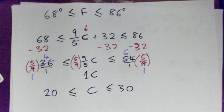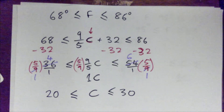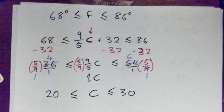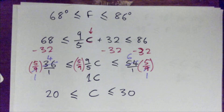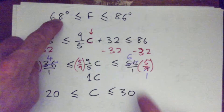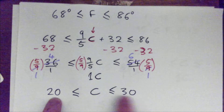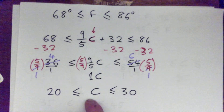That just means that if the maximum daily temperature in the month of September is between 68 and 86 degrees Fahrenheit, then in the month of September, the maximum daily temperature is between 20 and 30 degrees Celsius. Something like that.